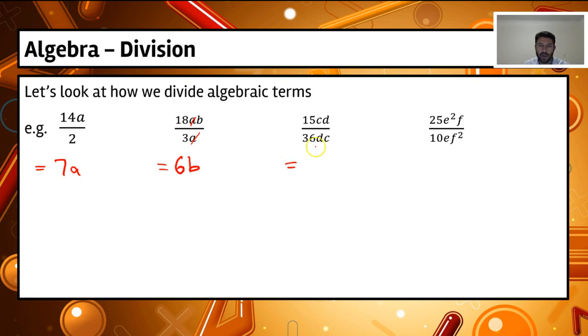In our next one here, 15cd divided by 36dc. Well, 15 divided by 36, they don't divide evenly. So we're going to have to look for a highest common factor. And then we can actually start cancelling out this fraction.